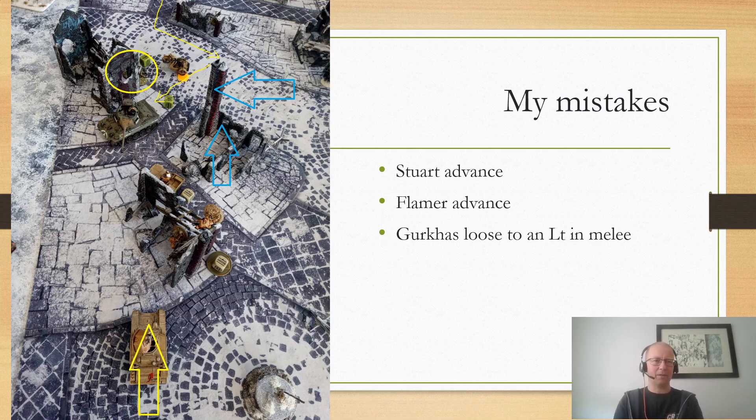Here you can see his Hellcat had moved up here into the blocking position and then moves up to kill my Dingo, which here the turret has been blown off. I had a lieutenant sitting on this objective. I had some Gurkhas which had moved up towards this objective and lost the close combat to his lieutenant. They were pretty banged up by that point, but they still lost the close combat. I also had a motorcycle run up and try to contest it. That died.